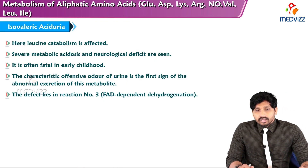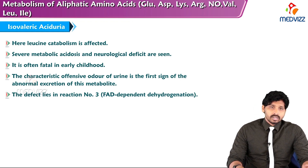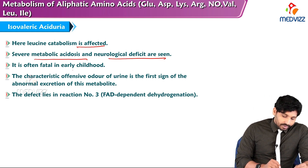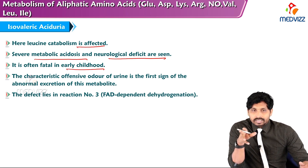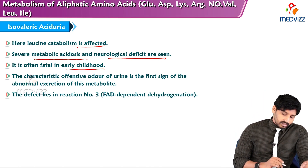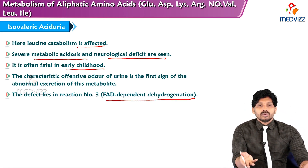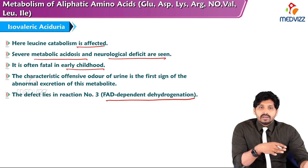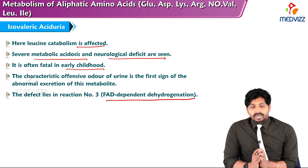The next disorder is isovaleric aciduria, another deficiency disorder of branched chain amino acids, in which leucine catabolism is specifically affected. Severe metabolic acidosis and neurological deficits can be seen, and it is often fatal in early childhood. The characteristic offensive odor in urine is the first sign, due to abnormal excretion of this metabolite. The defect lies in reaction number three — FAD-dependent dehydrogenation — so that leucine cannot be converted to further products, and its accumulation causes isovaleric aciduria. That's all about branched chain amino acid metabolism.